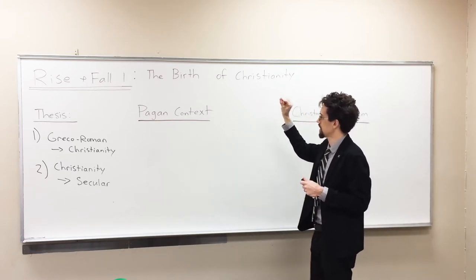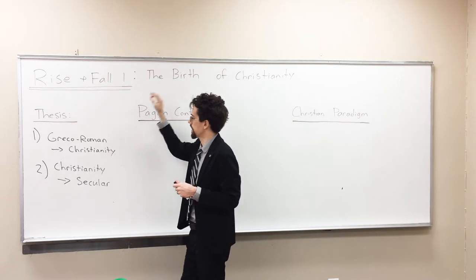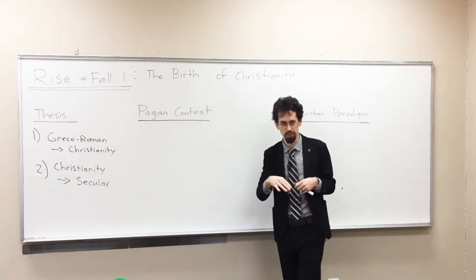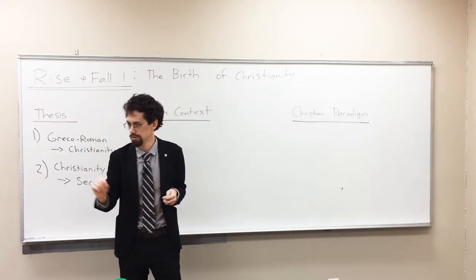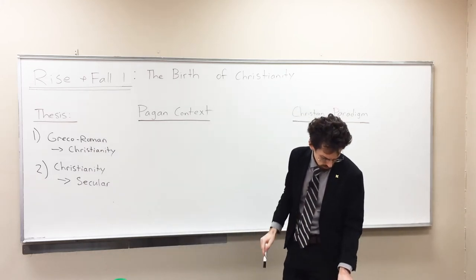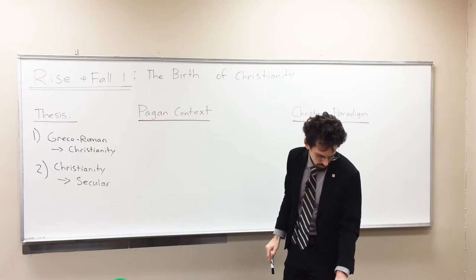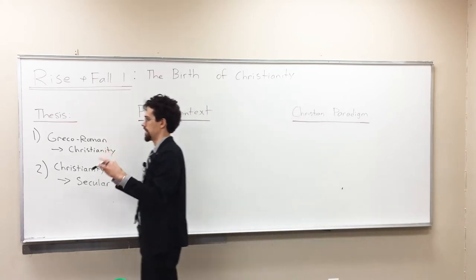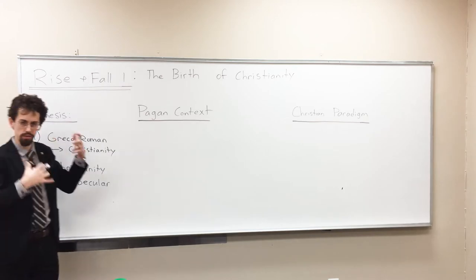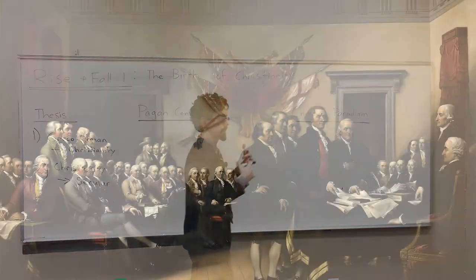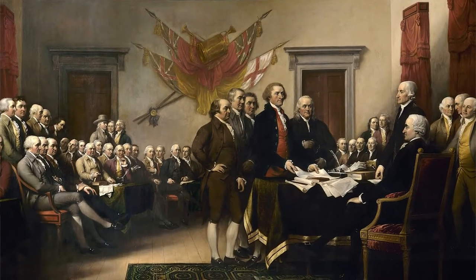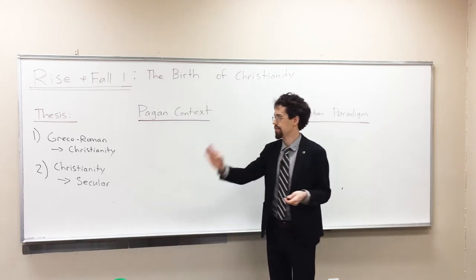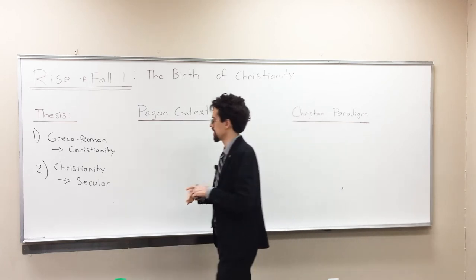Today we want to talk mainly about the first shift — how Christianity emerged in the ancient world, which is a very weird and strange story. In the pagan world there are a few things that are totally alien to our modern way of thinking, because we are the inheritors of values like liberalism, democracy, human rights, and personal freedom — almost all of which would have been completely alien to our pagan ancestors.